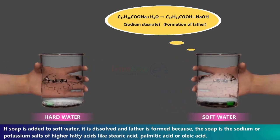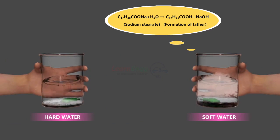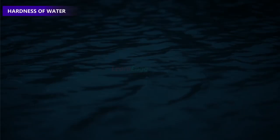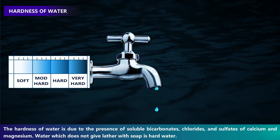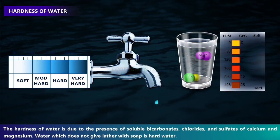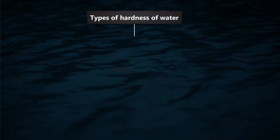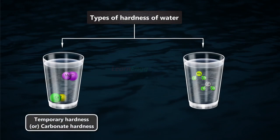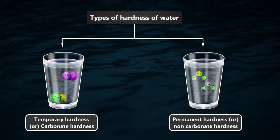The hardness of water is due to the presence of soluble bicarbonates, chlorides, and sulfates of calcium and magnesium. Water which does not give lather with soap is hard water. Types of hardness of water: temporary hardness or carbonate hardness, and permanent hardness or non-carbonate hardness.